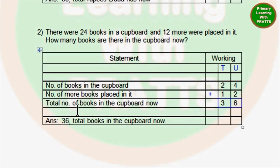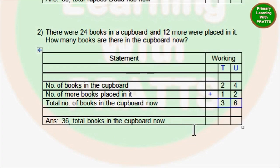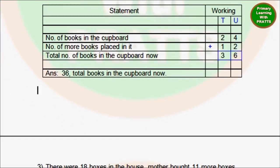Therefore, the total number of books in the cupboard now: 4 plus 2 is 6, 2 plus 1 is 3. Answer: 36 total books in the cupboard now.